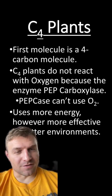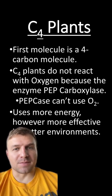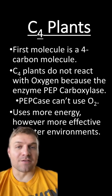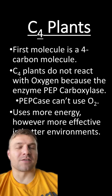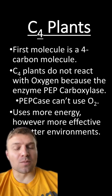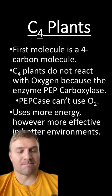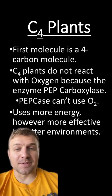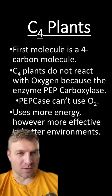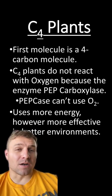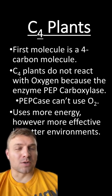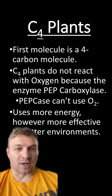C4 plants are a little different. They call them C4 plants because the first molecule within this process is a four-carbon molecule. One big difference between C3 and C4 plants is that C4 plants use a different enzyme. This enzyme's name is PEP carboxylase, or PEP case for short. PEP carboxylase can't use oxygen, which is a big problem when talking about photorespiration.